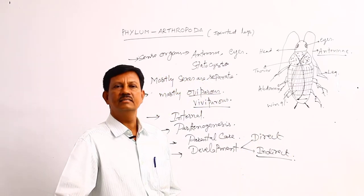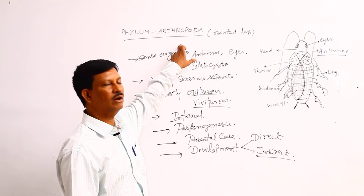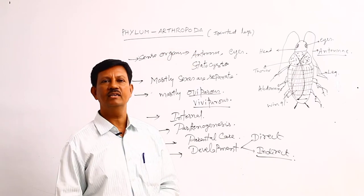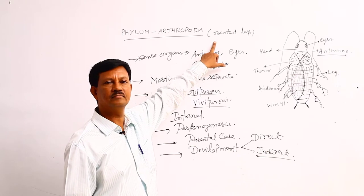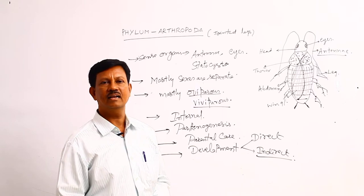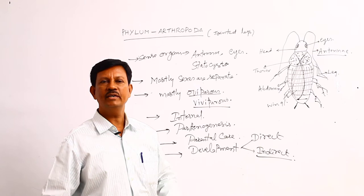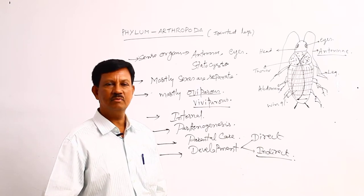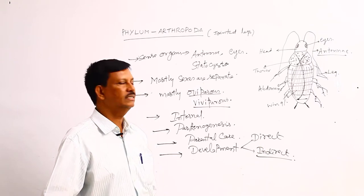These are the general characters of the phylum Arthropoda. Once again, we have to discuss some important characters. Arthropoda is the largest phylum of the animal kingdom. Jointed legs are present. They are mostly aquatic and terrestrial animals. They are metamerically segmented animals — body is divided into segments and a definite number of segments are present. Striated muscles are present, and the body cavity is a hemocoel body cavity.